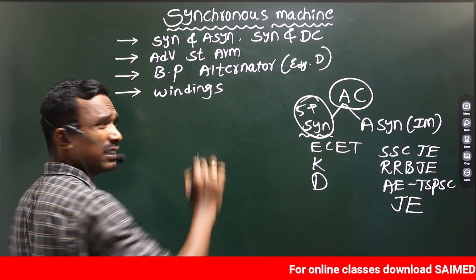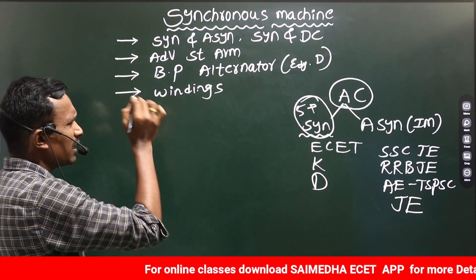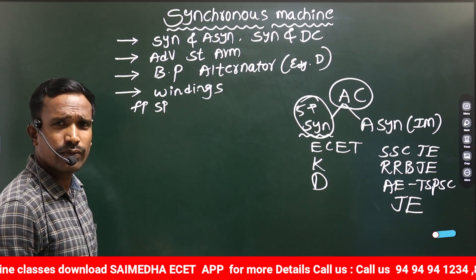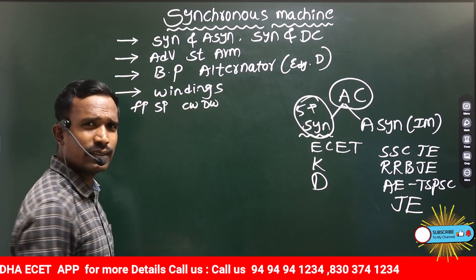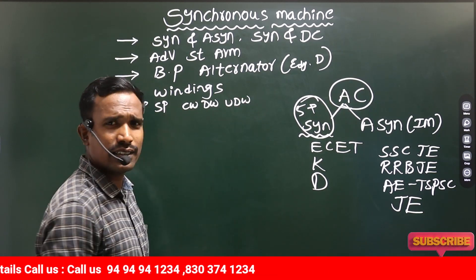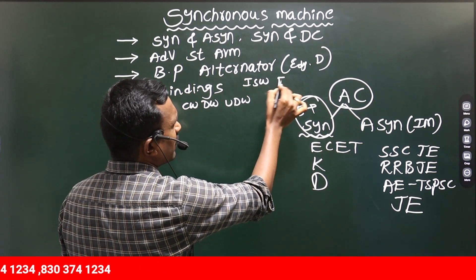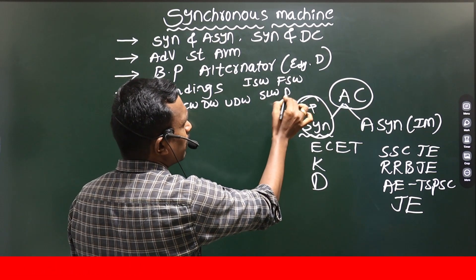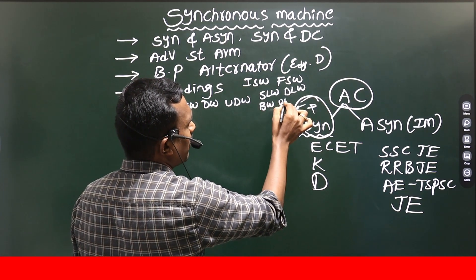The windings include: full pitch winding, and the disadvantages of full pitch winding and advantages of short pitch winding; concentrated winding; distributed winding; uniformly distributed winding; integral slot winding; fractional slot winding; single layer winding; double layer winding; balanced winding; and unbalanced winding.